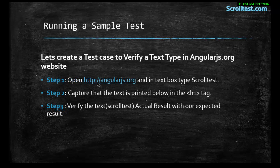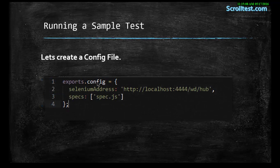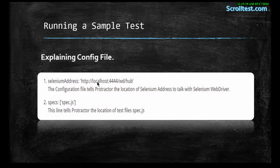In this simple example, what we are going to do is navigate to angularjs.org, type the text 'test', capture the text of the h1 tag, and verify the text with our expected result. The sample config file includes two things only: the Selenium address and the spec file path, which is spec.js. The Selenium address is basically the path of where the Selenium server is running, and the second one is the path of the spec file.